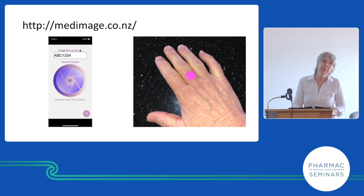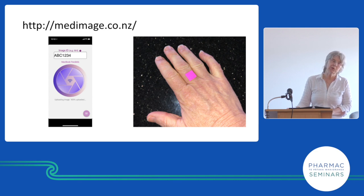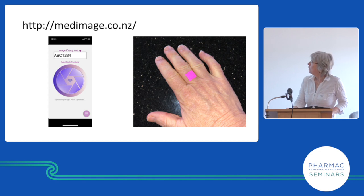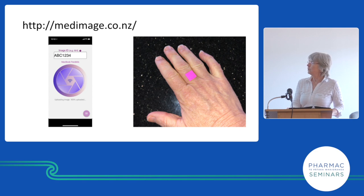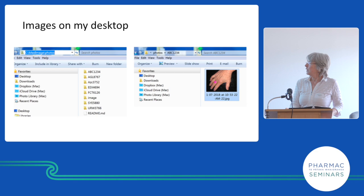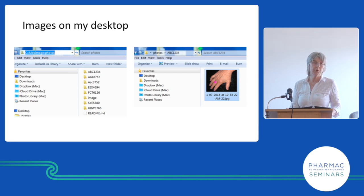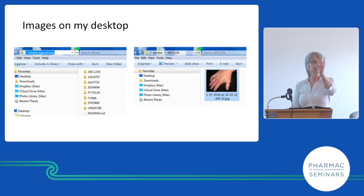There's also a device called MedImage. This is quicker and easier, but you can't do consent on it. It's dead simple once you've set it up — dead simple to set up — but it takes about an hour to read the instructions. All I have to do is open the software, take the photograph, press the button, and off it goes and lands in my laptop or hospital computer. It lands in a folder for the NHI, so it puts it in a folder with that NHI. If you pay the MedImage fee, they will set it up for your practice so that it lands in the patient's notes.